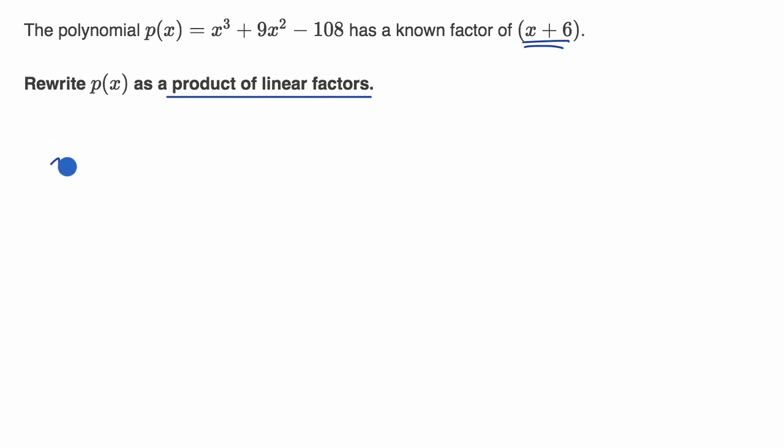So if I were to try to figure out what x + 6 divided into x³ + 9x², now we're gonna have to be careful. You might be tempted to just write -108 there, but then this gets tricky because you have your third degree column, your second degree column, you need your first degree column, but you just put your zero degree, your constant column here.